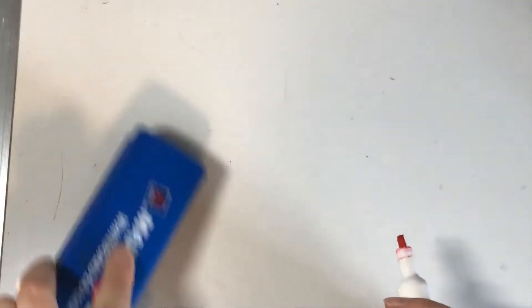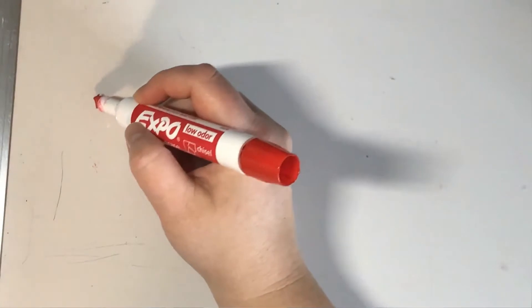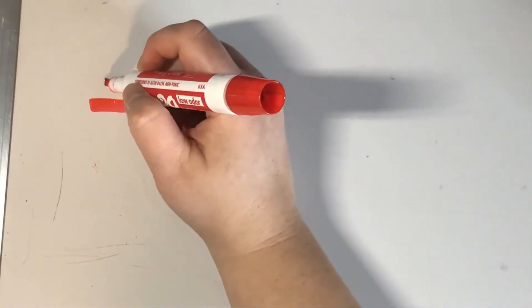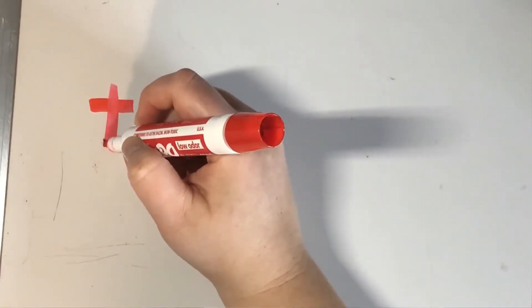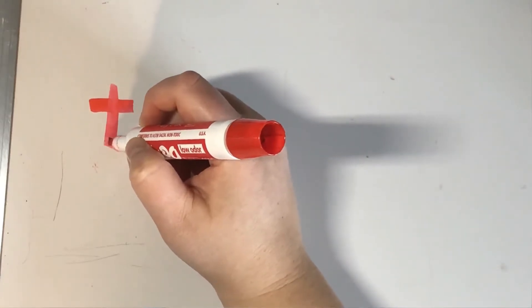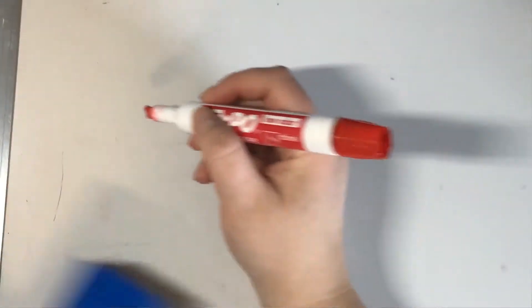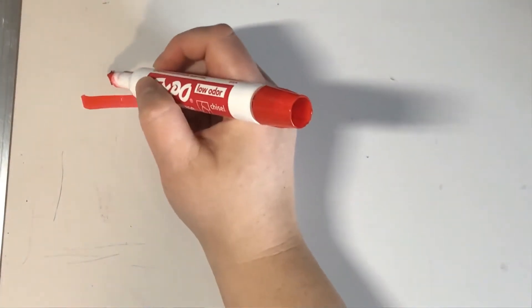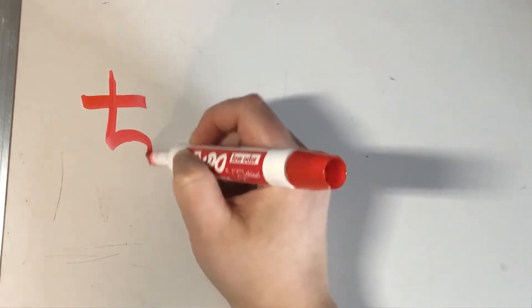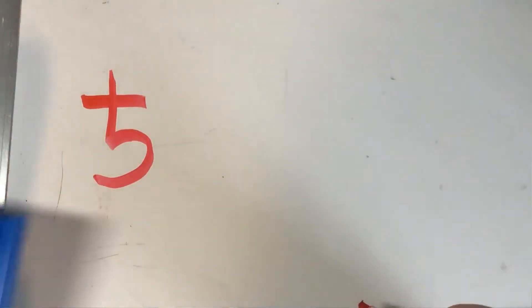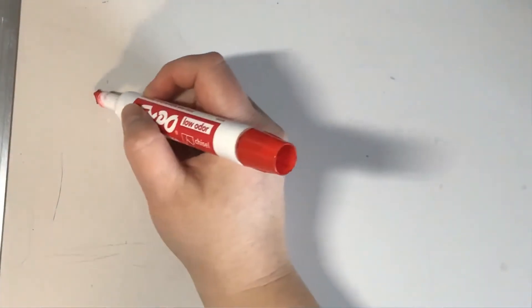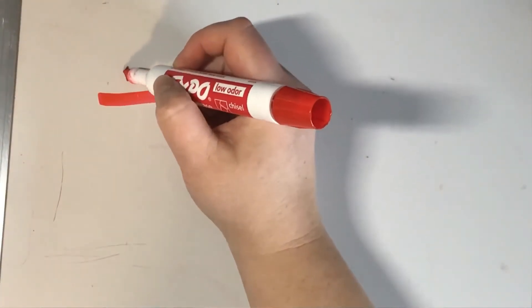Chi — same idea. We do a small line across, left to right. Then a line going through, but we stop about midpoint, and then do kind of a backward C. So: line across, down, and backward C. That's chi.